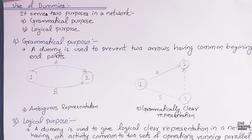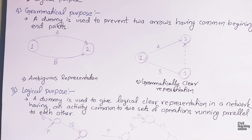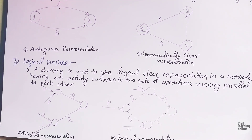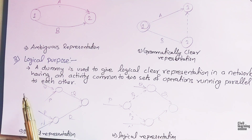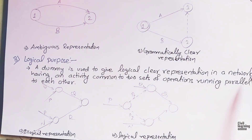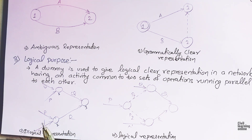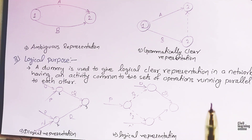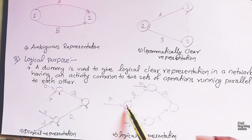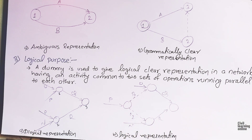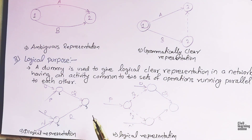The second purpose is the logical purpose. A dummy is used to give a logically clear representation in a network having an activity common to two sets of operations running parallel to each other. For example, a common activity P terminating at two different events is redrawn as P1 and P2 with a separate dummy activity P, splitting it into two sub-activities. This is how we represent dummy activities in the project network.